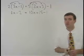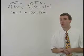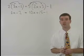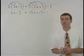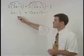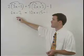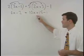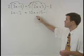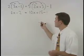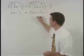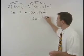Now here's the most important step. Before moving on, make sure that you've simplified both sides of the equation as much as you can. Notice that the left side cannot be simplified any further. But on the right, 10x plus 15 minus 1 can be simplified to 10x plus 14.